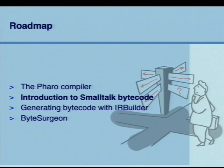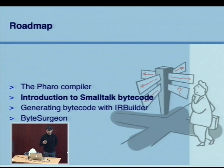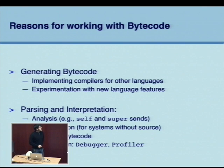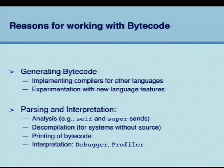Now we are going to have an introduction to the Smalltalk bytecode. You have already seen quite a bit of that up to this point. We are going to try to give some kind of structure to what we have seen. The reason for working with bytecodes is that we can generate different kinds of bytecodes and we can implement compilers for other languages — so we can remove the bytecode generation we have and put another bytecode generation to generate something else, any other language.